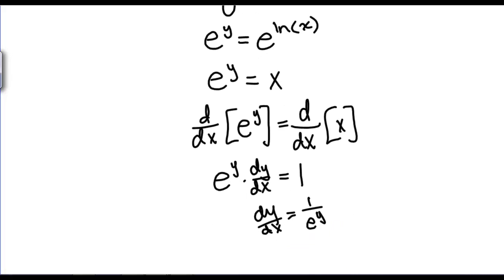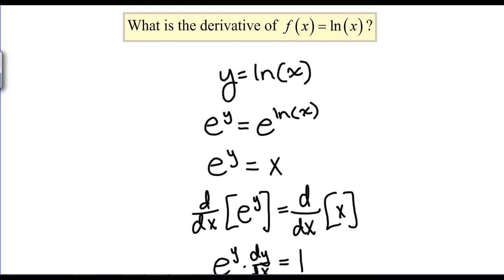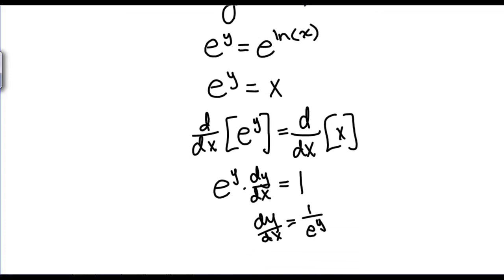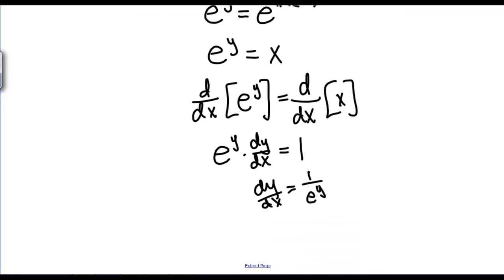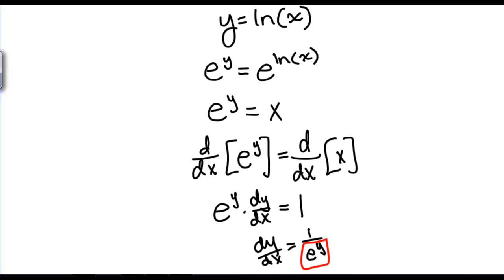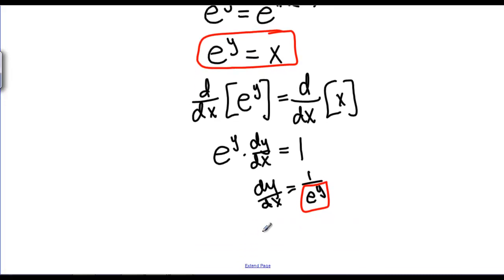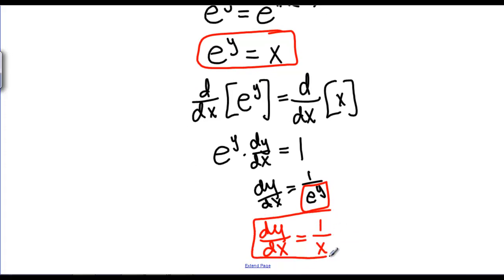This looks great, except that we want a derivative rule for natural log of X, so our answer ought to be in terms of X. Do we have a way of writing E to the Y in terms of X? Well, it turns out we do. E to the Y is actually equal to X, so DY/DX is actually just equal to 1 over X. That's a new derivative rule: the derivative of the natural log of X is 1 over X.